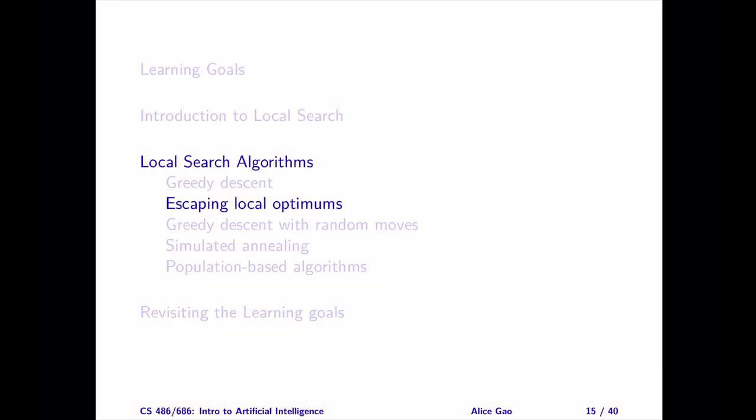That's everything on the strategies for escaping local optimums. Let me summarize. After watching this video, you should be able to: formally define local and global optimums; describe different types of local optimums; determine whether a given state is a local optimum and/or a global optimum; and describe some strategies for escaping local optimums. Thank you very much for watching. I will see you in the next video.